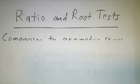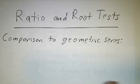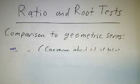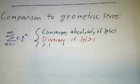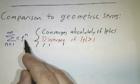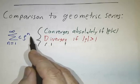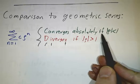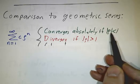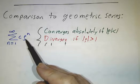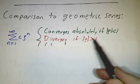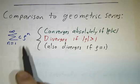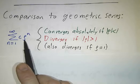The idea of both the ratio and the root test is we're going to compare things to a geometric series. A geometric series is something of the form: sum of some constant times a common ratio to the n-th power. If that common ratio is less than one, the terms get smaller and the geometric series converges. If the common ratio is bigger than one, the terms get bigger and bigger and it diverges. It also diverges if rho is equal to one or minus one.